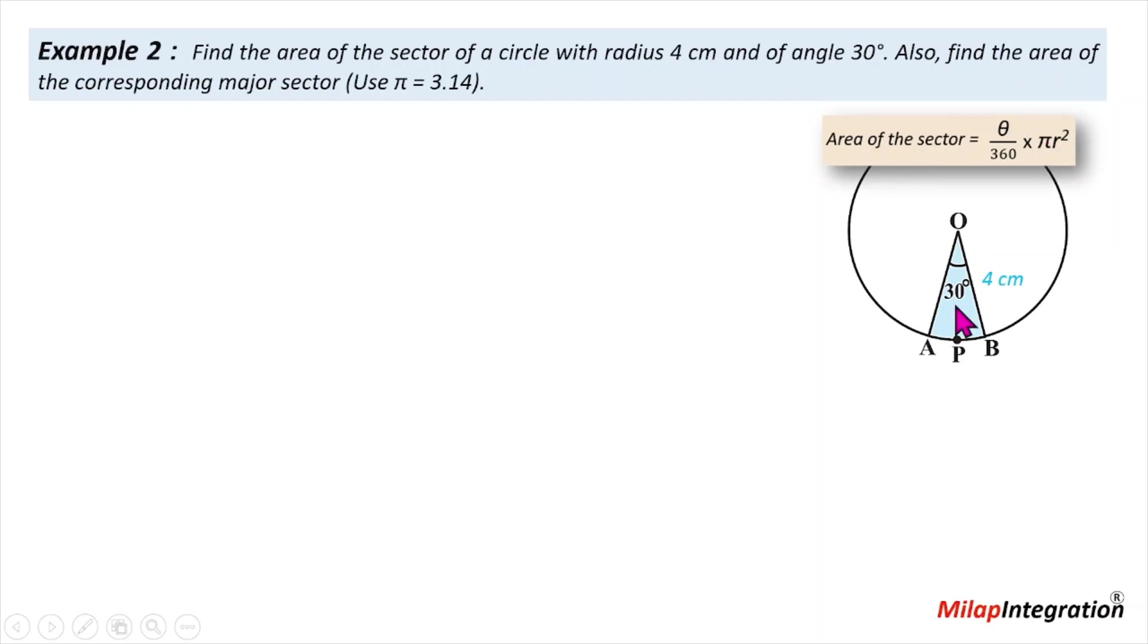So this formula: theta is 30, pi value is 3.14, r radius is 4 cm, so easily the area will be removed. Now, another question is also find the area of the corresponding major sector, which major sector is the remaining sector. Blue color is the minor sector, white is the major sector.